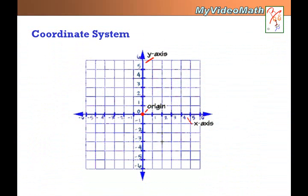The coordinate system has two lines. One is horizontal, it's called the x-axis, and one is vertical, it's called the y-axis. Where these two lines meet, this point is called the origin.